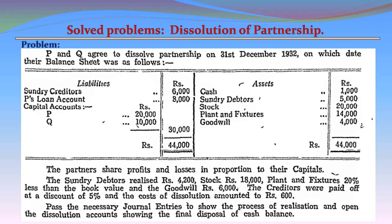The Problem. P & Q agreed to dissolve their partnership on 31st December. Balance sheet — Assets: Cash 1,000; Sundry Debtors 5,000; Stock 20,000; Plant and Fixtures 14,000; Goodwill 4,000; Total Assets 44,000. Liabilities: Sundry Creditors 6,000; P's Loan Account 8,000; Capital Accounts — P: 20,000, Q: 10,000; Total Capital 30,000; Total Liabilities 44,000. The partners share profits and losses in proportion to their capitals. Sundry Debtors realized 4,200; Stock 18,000; Plant and Fixtures 20% less than book value; Goodwill 6,000. Creditors were paid off at a discount of 5%, and the costs of dissolution amounted to 600.